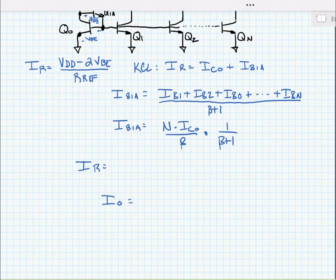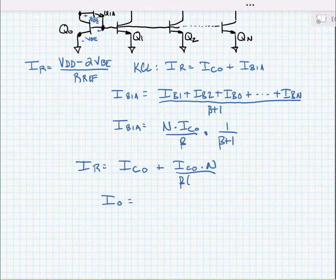Making another substitution back into the original KCL expression, we can say that IR is equal to IC0 plus IC0 times N divided by beta times beta plus 1.